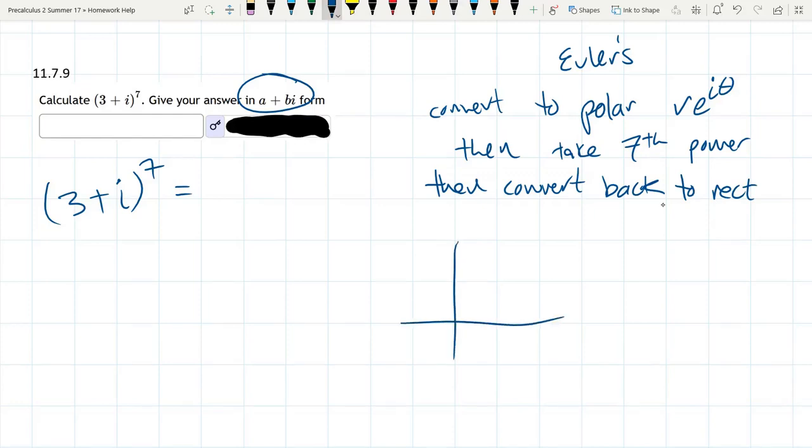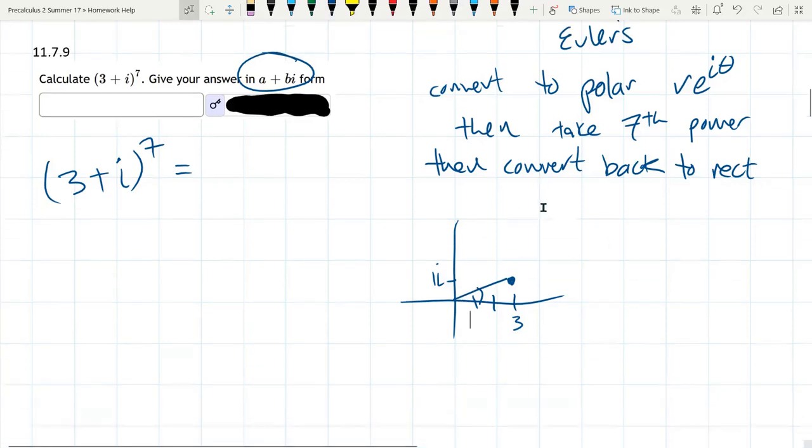3 plus i. So that means you go over 3, go up i, which is 1, or 1i. There we go. Now, first of all, this angle is not going to be an angle that we're familiar with, unfortunately. So that's going to be a little annoying. That's okay.